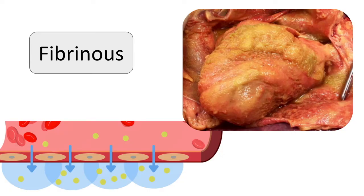With greater increases in vascular permeability, large molecules like fibrinogen are able to pass out of the blood, and fibrin can be formed and then deposited in extracellular spaces. Fibrinous exudate develops when the vascular leaks are large or there is a local pro-coagulant stimulus, such as cancer cells.